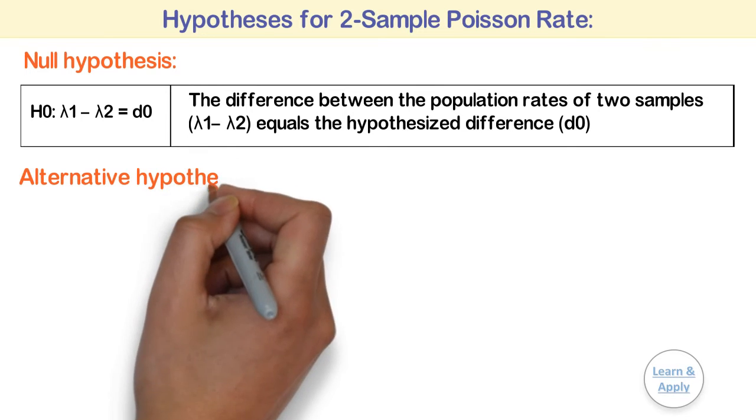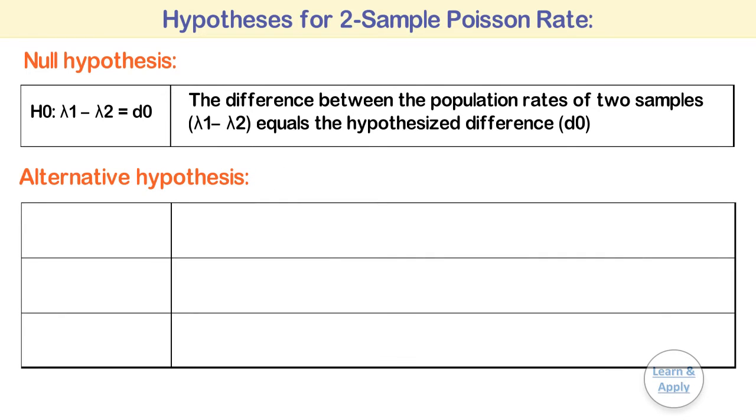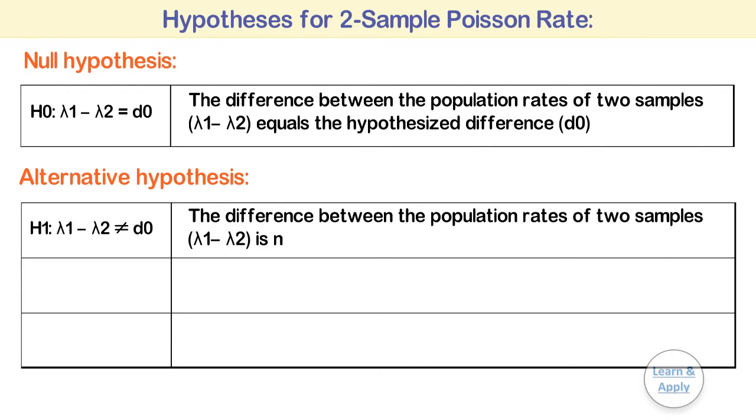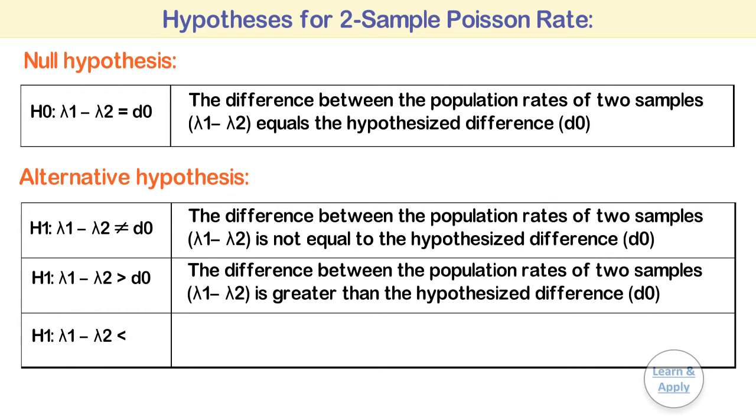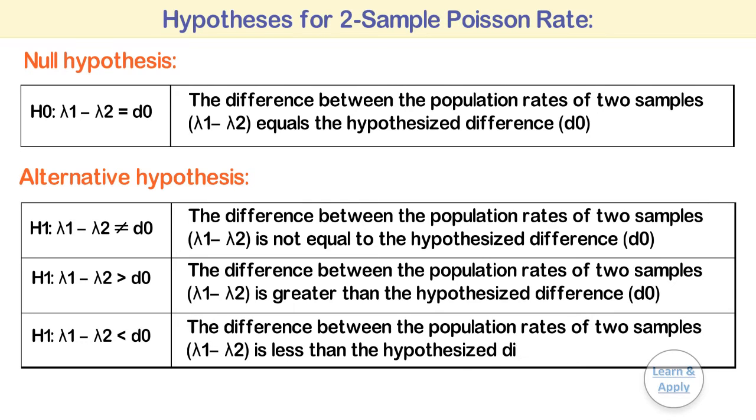Alternative hypothesis: H1: λ1 - λ2 ≠ D0, or H1: λ1 - λ2 > D0, or H1: λ1 - λ2 < D0. That is, the difference between the population rates of two samples, λ1 - λ2, is less than the hypothesized difference D0.